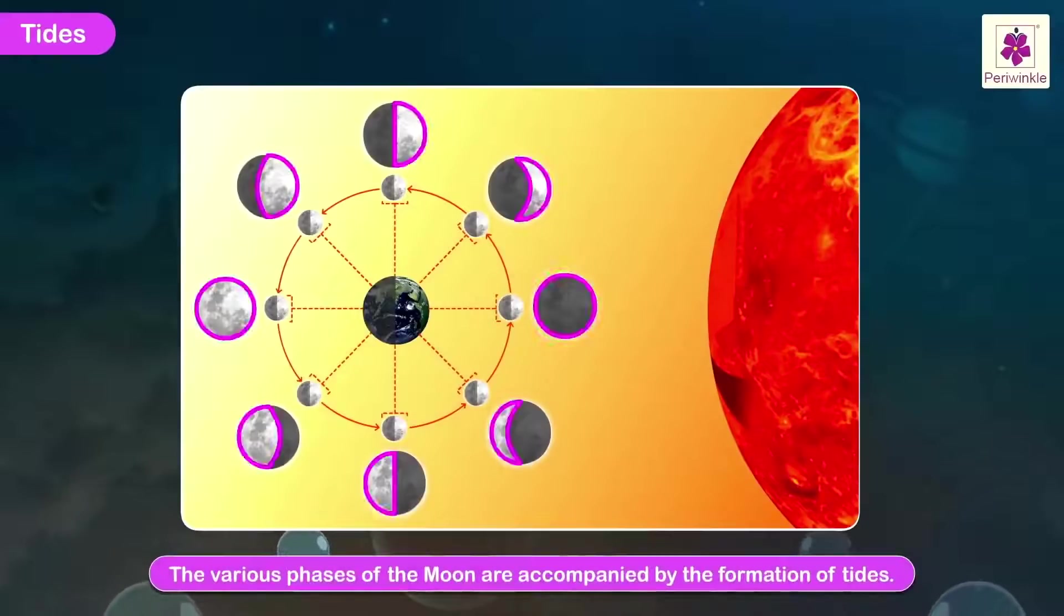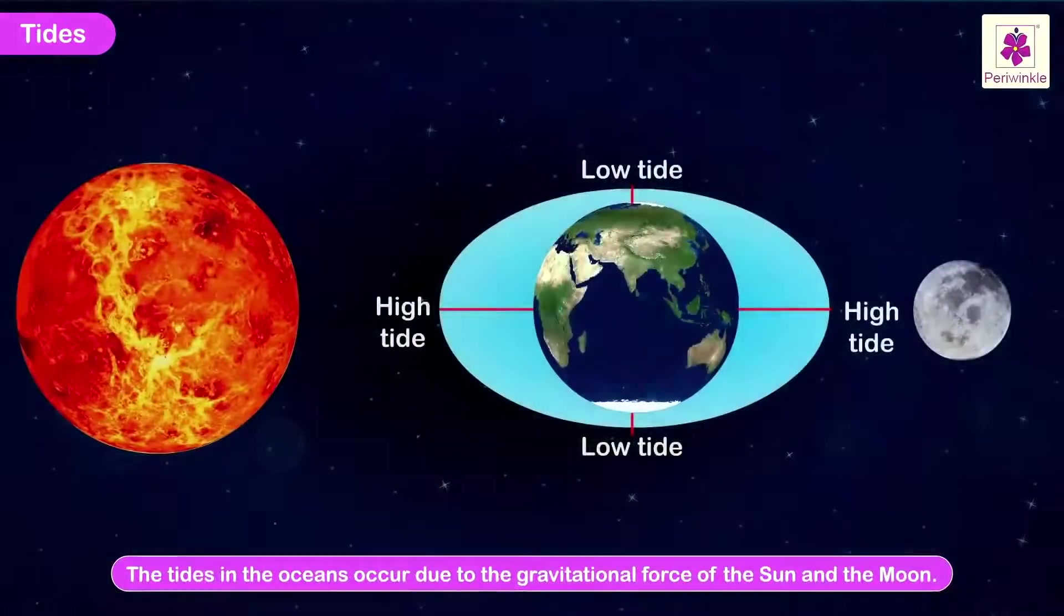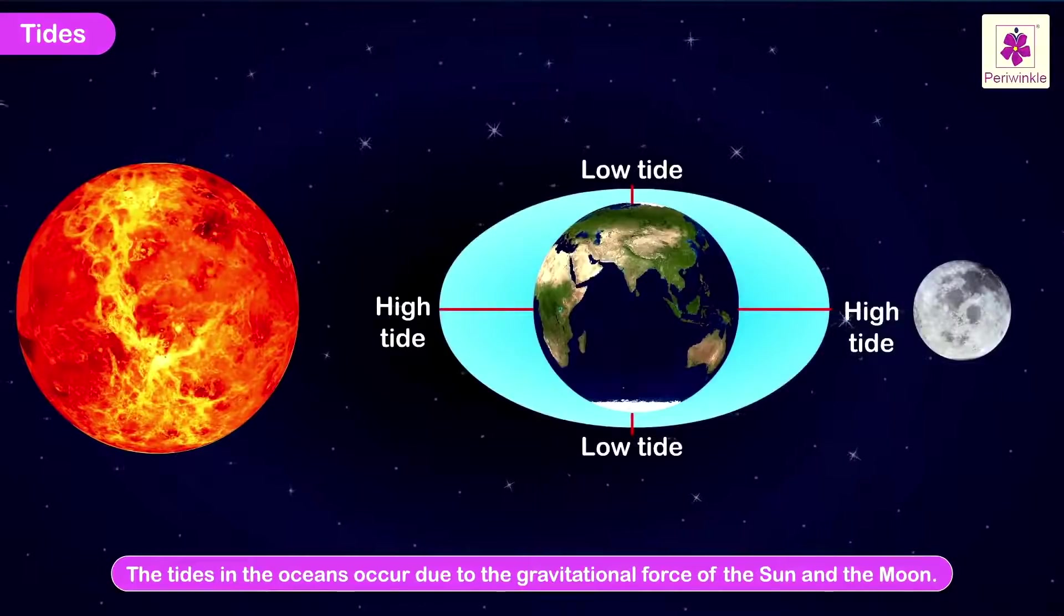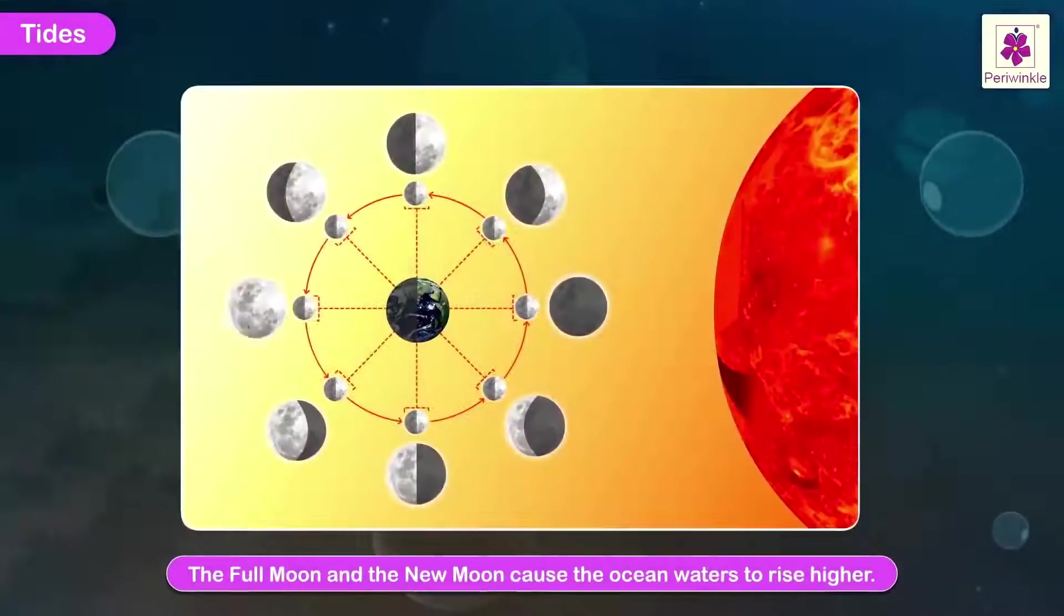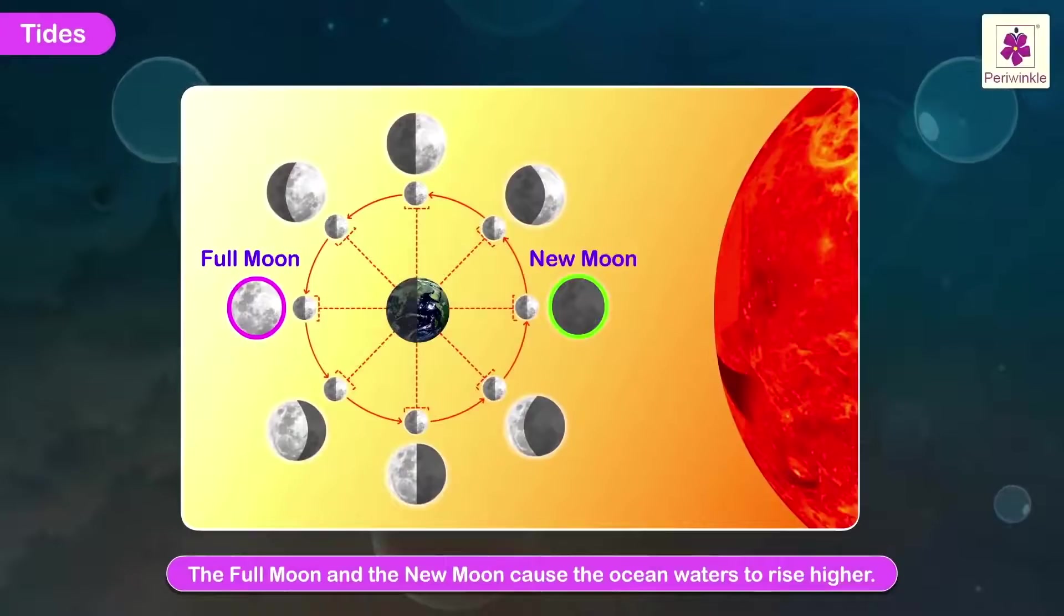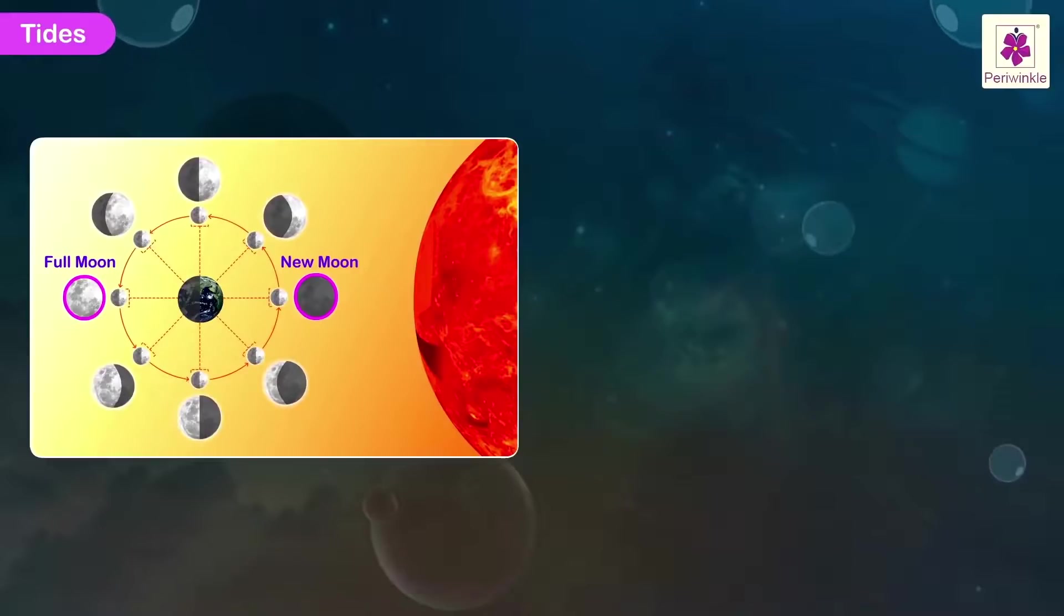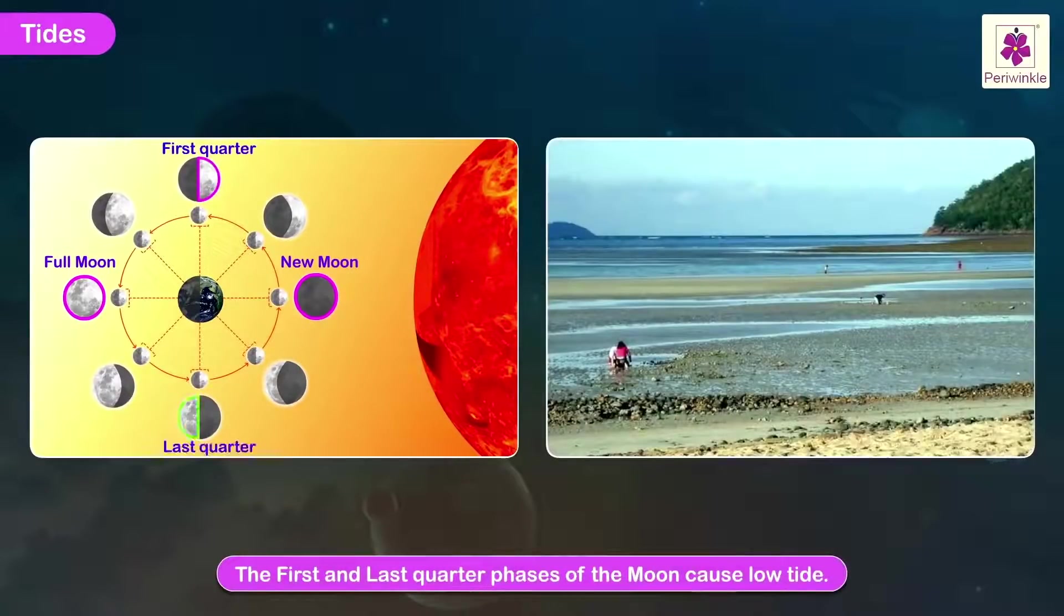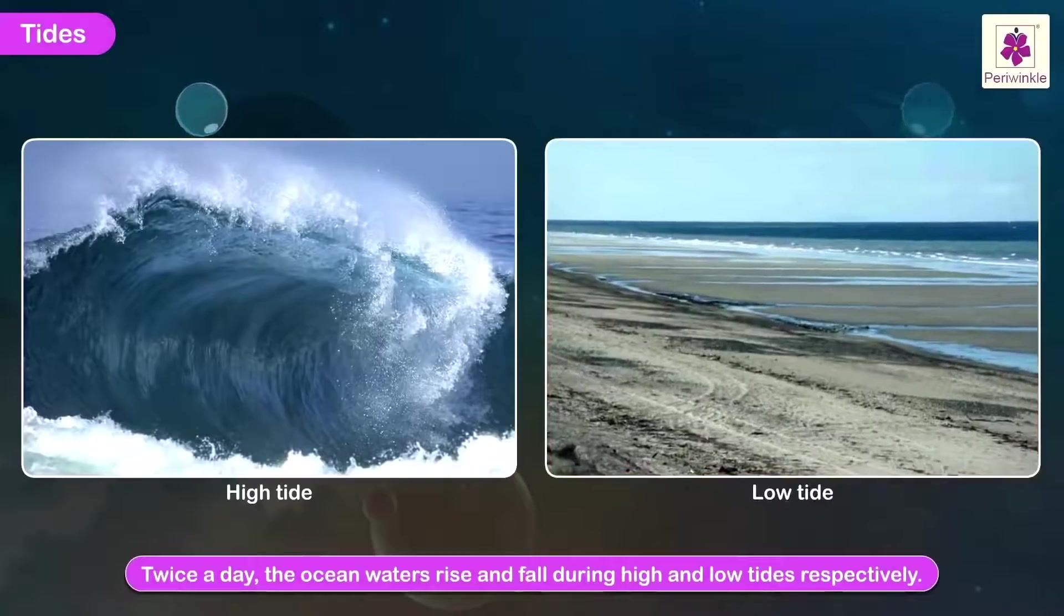Tides. The various phases of the Moon are accompanied by the formation of tides. The tides in the oceans occur due to the gravitational force of the Sun and the Moon. The full Moon and the new Moon cause the ocean waters to rise higher, as compared to the first and the last quarter phases of the Moon. Twice a day the ocean waters rise and fall during high and low tides respectively.